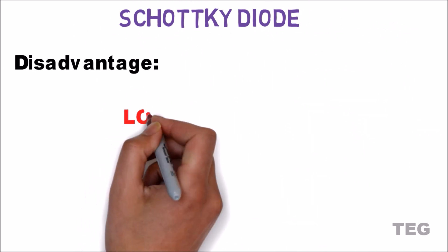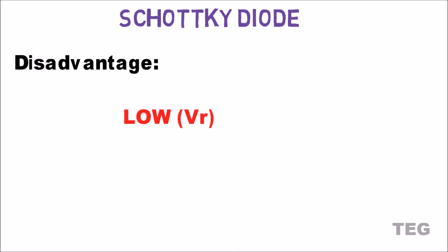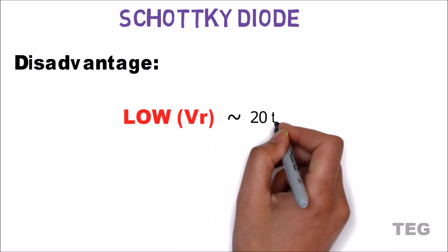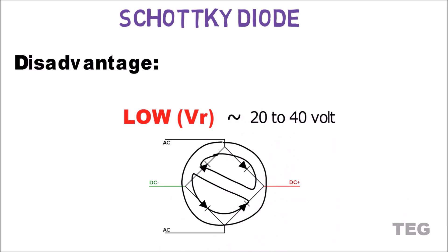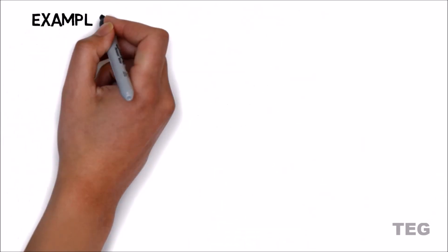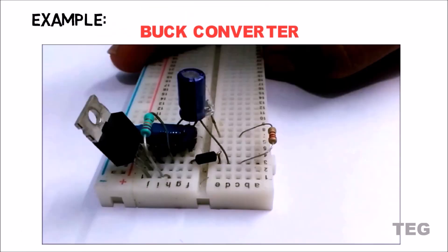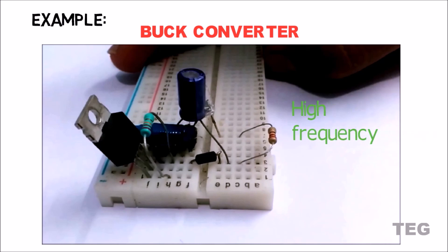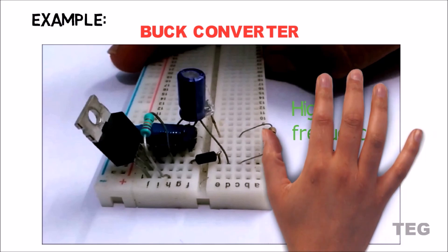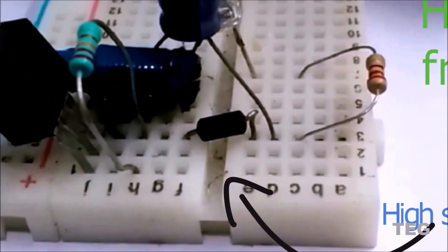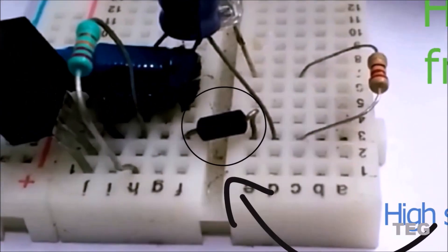A disadvantage of the Schottky diode is its low breakdown voltage, usually between 20V to 40V, making it unsuitable for a rectifier circuit. As an example, let's say we are designing a buck converter like we did in one of the previous videos. Since the MOSFET in that circuit switches at a very high frequency, the diode used in that circuit must have high switching speed, and thus the Schottky diode is an optimum choice.